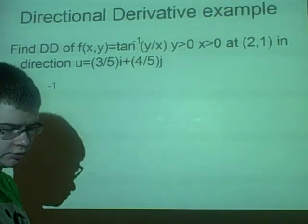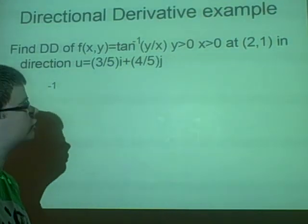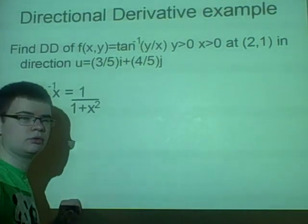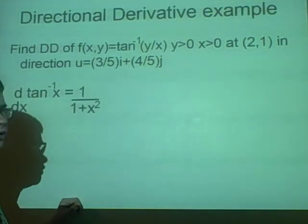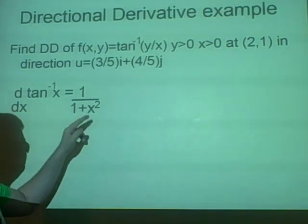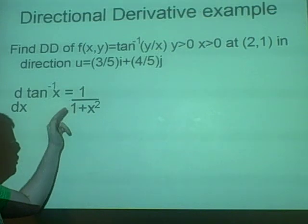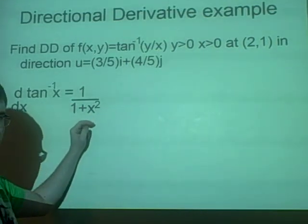So what we already know about the derivative of tan inverse is that it equals 1/(1+x²). So what we want to do, we want to change the x for y/x. So we have 1/(1+y²/x²).